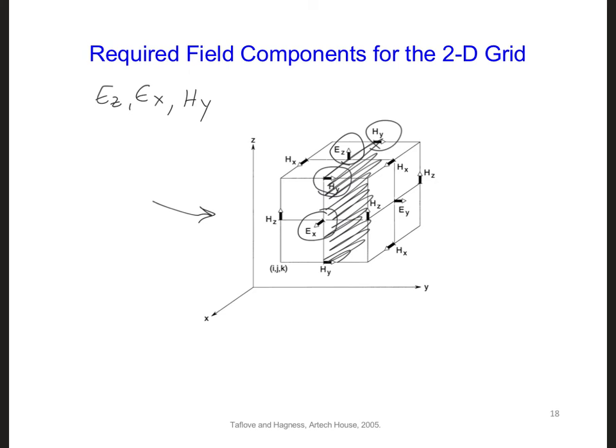So let's first see if we can build a basic free space, two-dimensional FDTD code with Ez, Ex, and Hy components. Then we'll try to adapt this model to the design challenge.